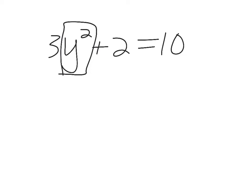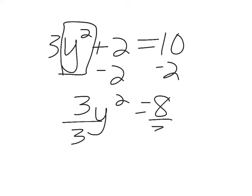Okay, next example. So if I have 3y squared plus 2 equals 10. I'm going to get the y squared alone first, so I'm going to subtract 2. So I have 3y squared equals 8. I'm going to divide by 3. So I have y squared equals 8 thirds.